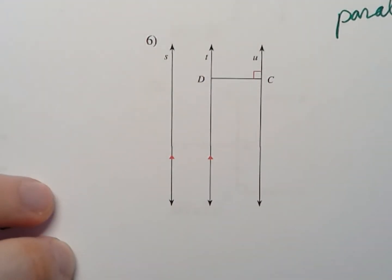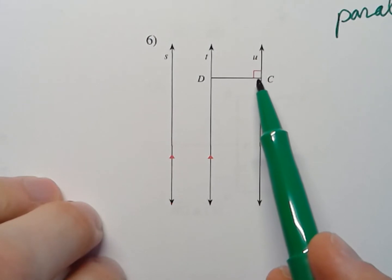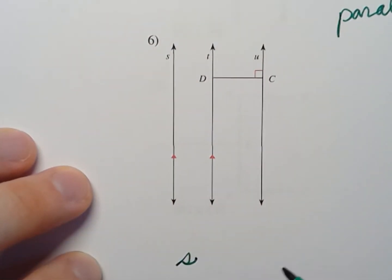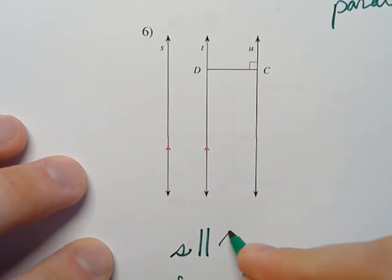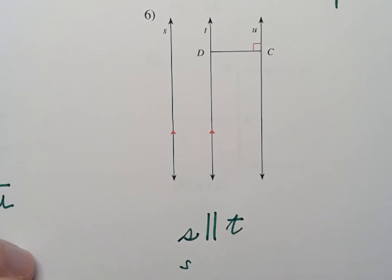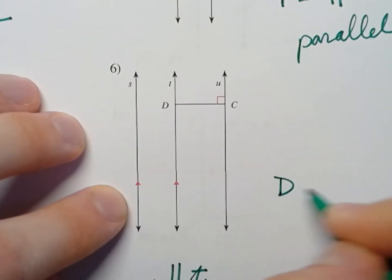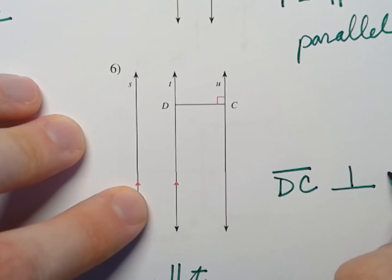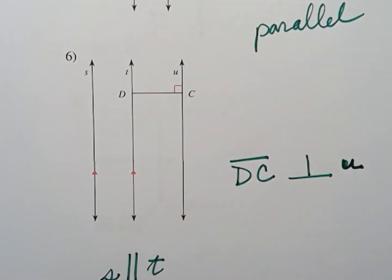What's going on in this diagram? Well, there are a couple of things we can say. We can say that line s and line t are parallel to each other. And we can also say that this little perpendicular mark means that line s is perpendicular to line t. You can also say that line segment DC is perpendicular to line u.